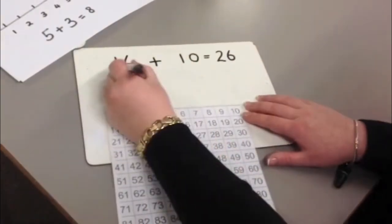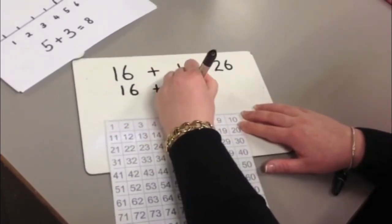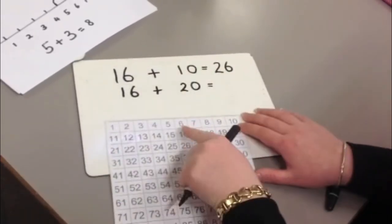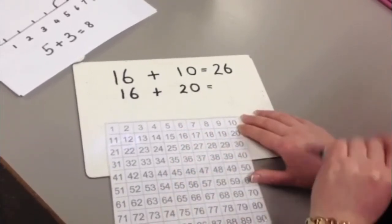For 16 add 20, it would be 2 jumps down. 16 add 20: 1, 2, 36. So 16 add 20, it would be 26.